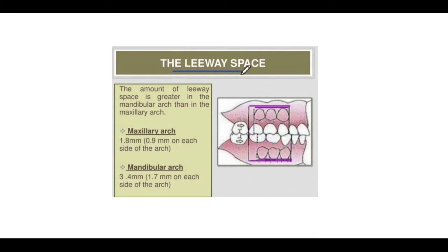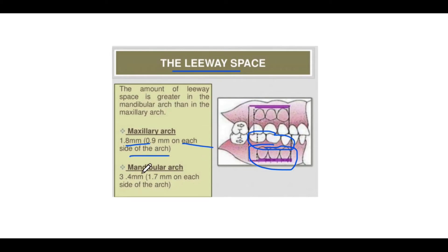Leeway space is the difference between the combined width of the primary first and second molars and canine, to the combined width of the premolars and permanent canine. In the maxillary arch it is 1.8 mm — 0.9 mm on each side of the arch. In the mandible it is 3.4 mm — 1.7 mm on each side.